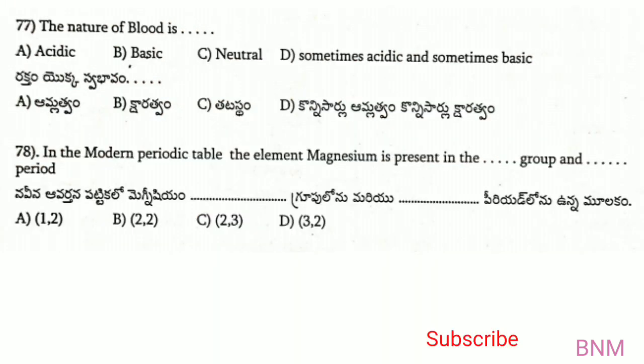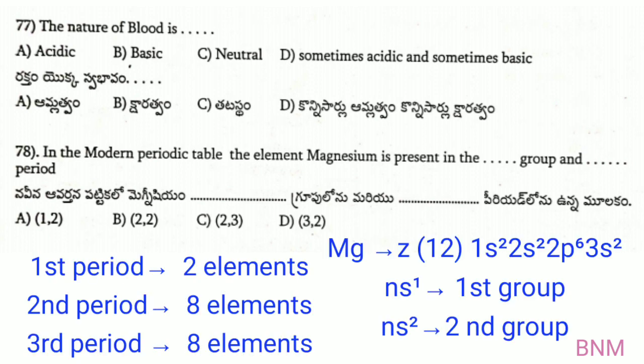The nature of blood: blood has a pH value above 7, equal to 7.4. Blood is basic in nature. B is the right answer.